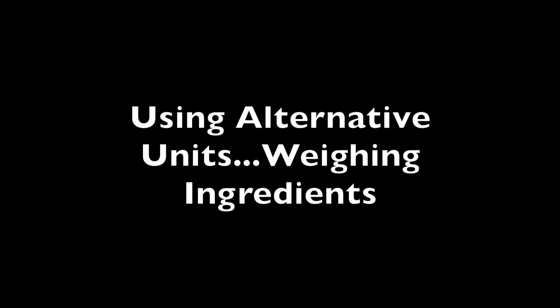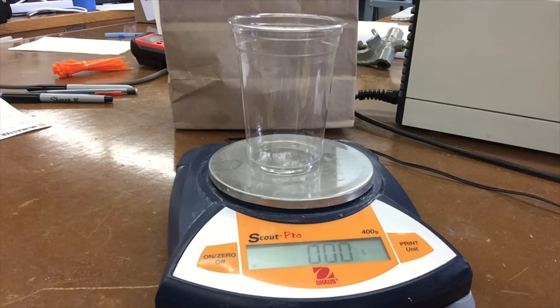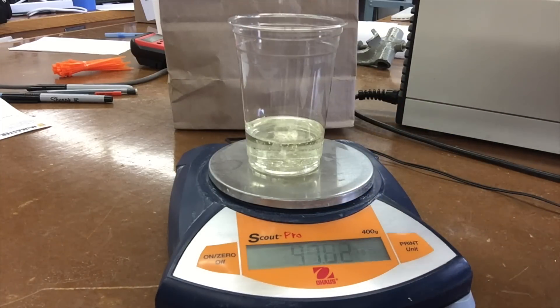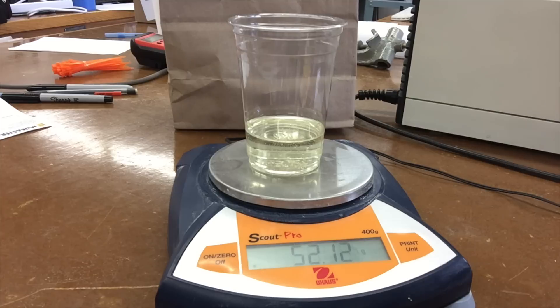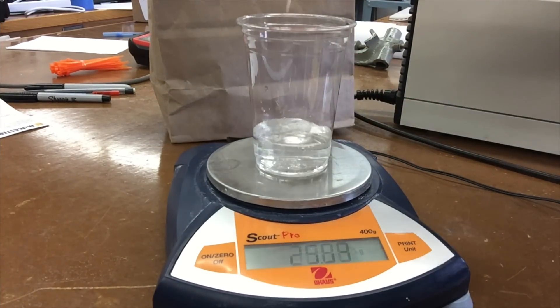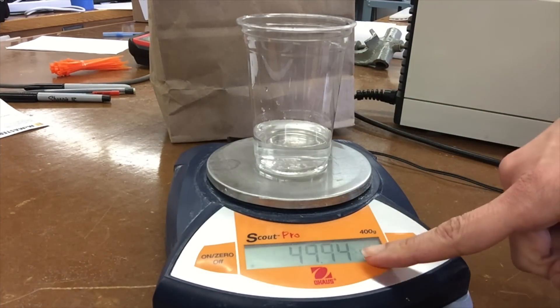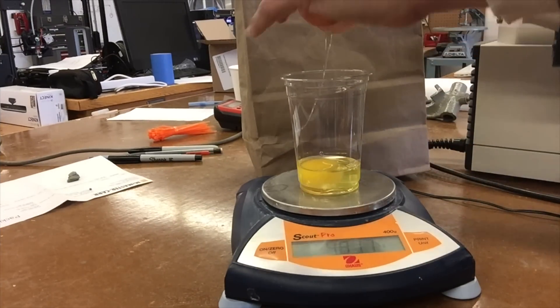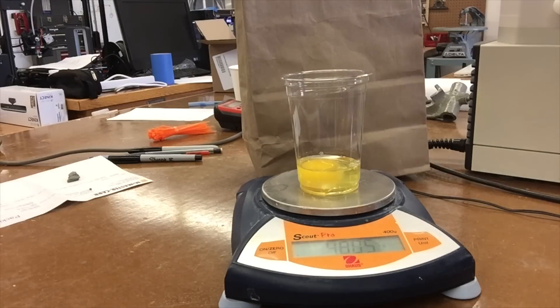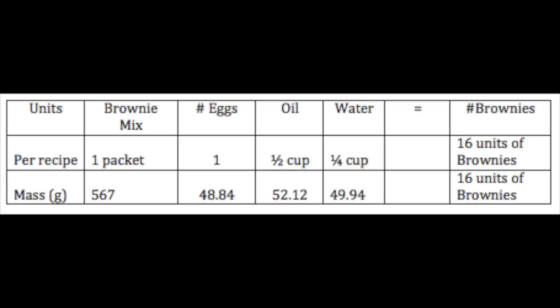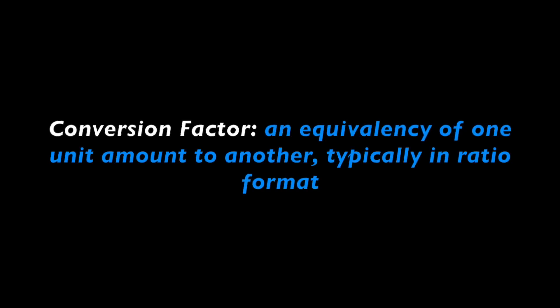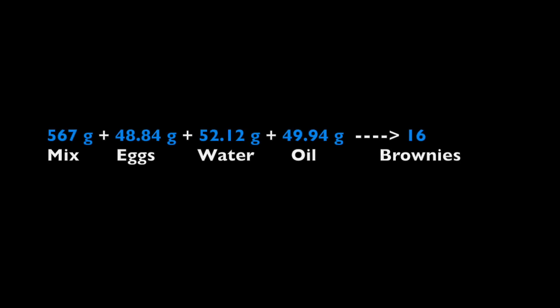Can we use an alternative measure for our ingredients such as mass? We can actually weigh all of our ingredients — including the oil, the water, and of course the egg. All these units will now be in grams rather than measurements of cups or units. We can use a tabular format again to summarize this information and show the equivalencies between the units, also called conversion factors. A conversion factor is an equivalency of one unit amount to another, typically written in ratio format. So instead of cup units, we can write our chemical equation in grams.